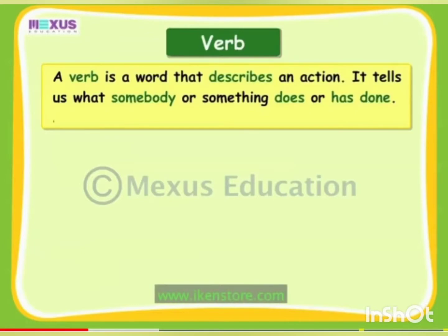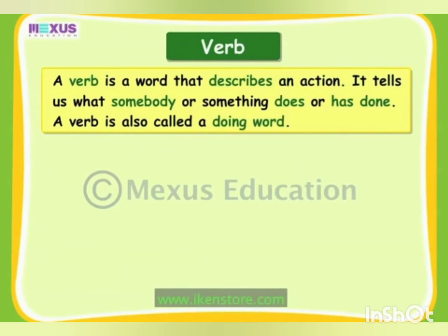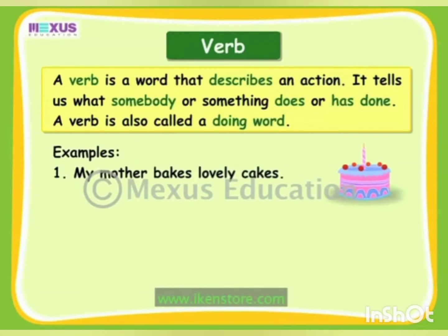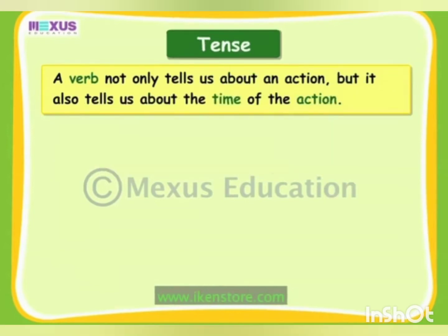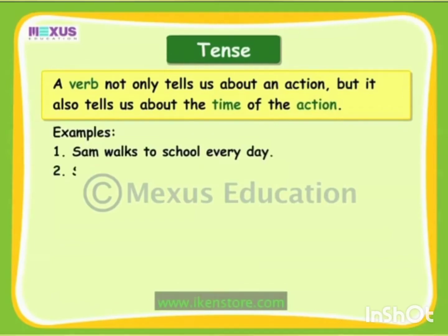Let us first revise verbs. A verb is a word that describes an action. It tells us what somebody or something does or has done. A verb is also called a doing word. For example, my mother bakes lovely cakes — here, 'bakes' is a verb which tells about the present time.